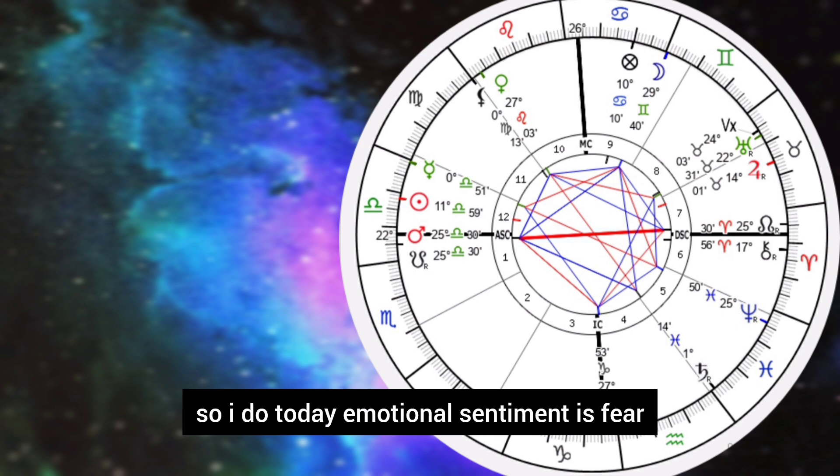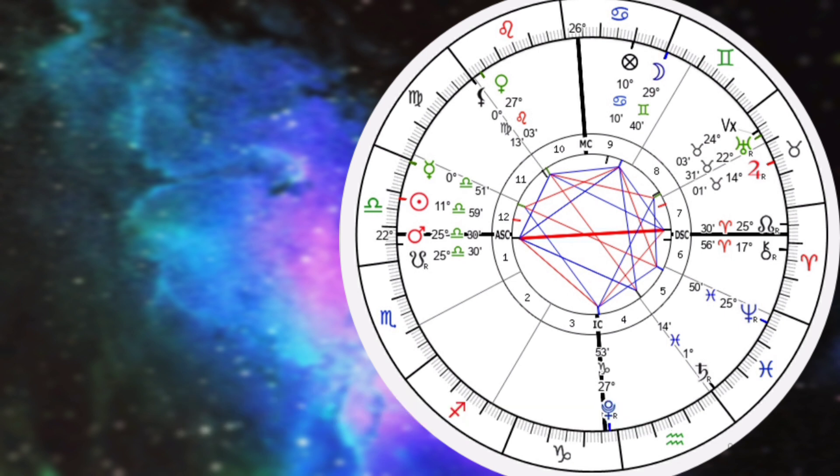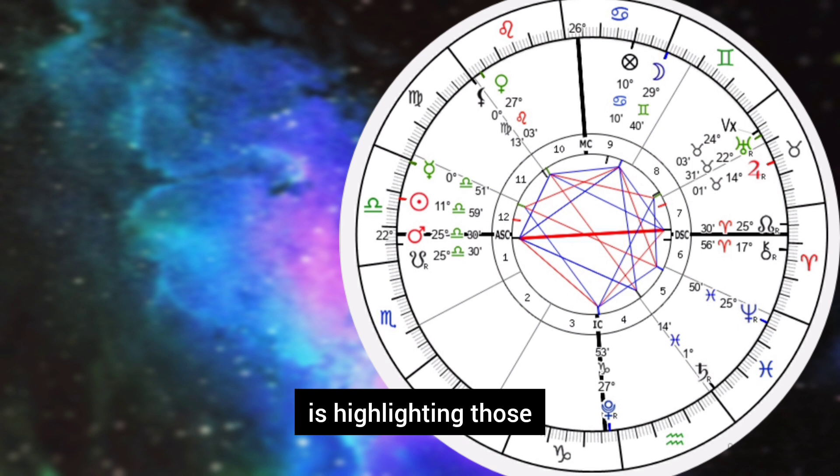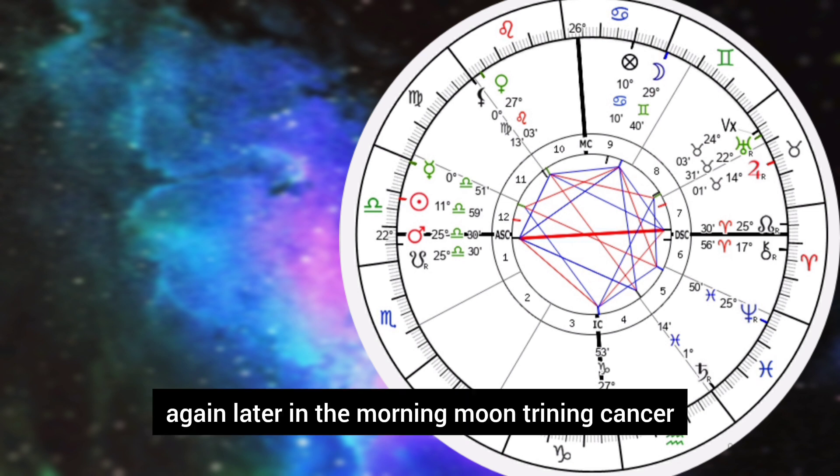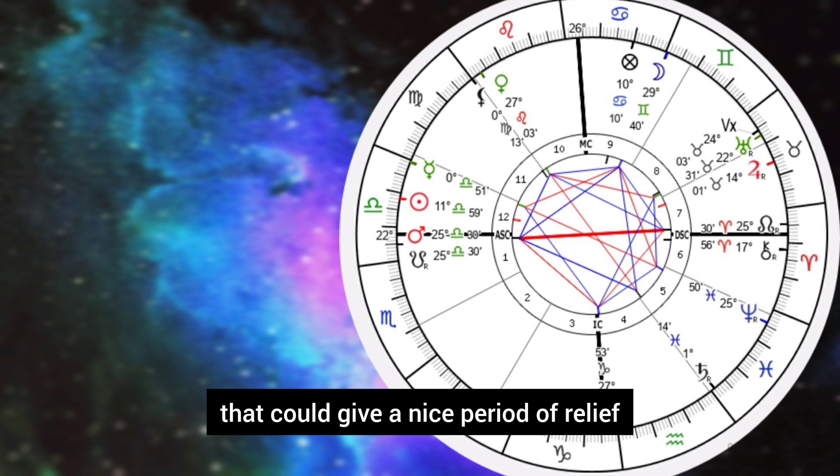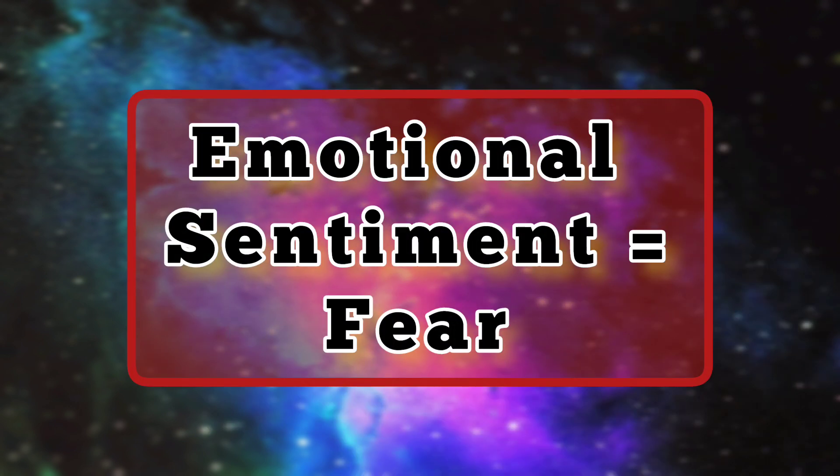So today emotional sentiment is fear. The Mars opposite the north node is taking center stage here. The moon in Cancer is highlighting those angered volatile emotions. Again, later in the morning, the moon trining Saturn could give a nice period of relief, but overall the day is trending in fear, negative price movement. Emotional sentiment is fear.